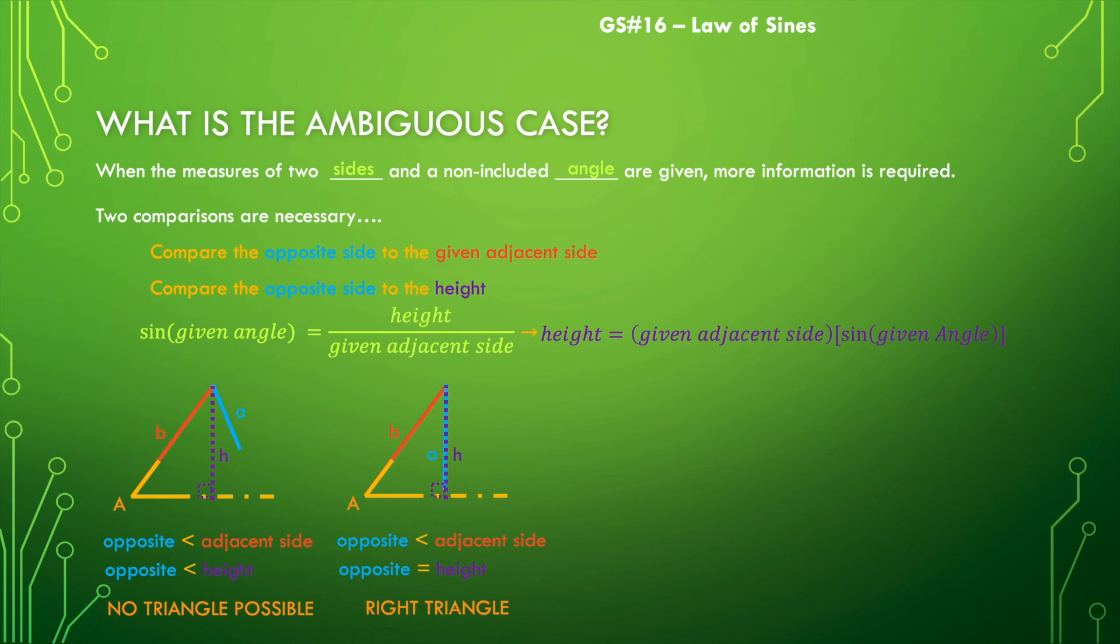In the third case, we have something that looks like this. Here's our angle A again and our adjacent side. Here is the height of the triangle. And our opposite side is going to be shorter than the adjacent side, but longer than the height.